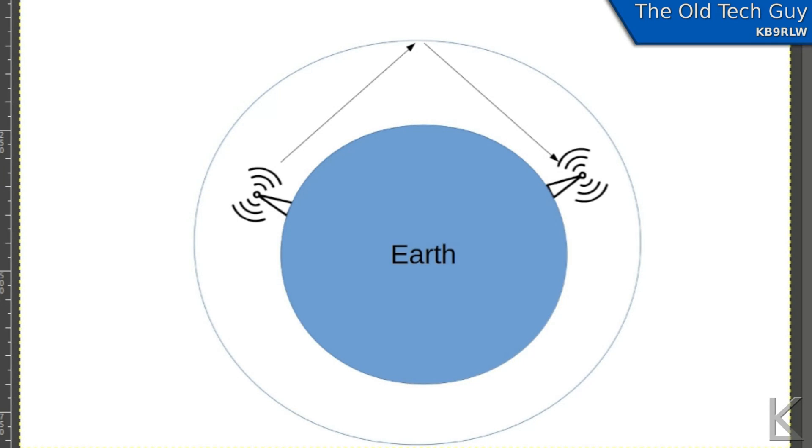What we're looking at here is an extremely basic, simple, amateur diagram of radio propagation. Alrighty, so this would be the ionosphere up here.